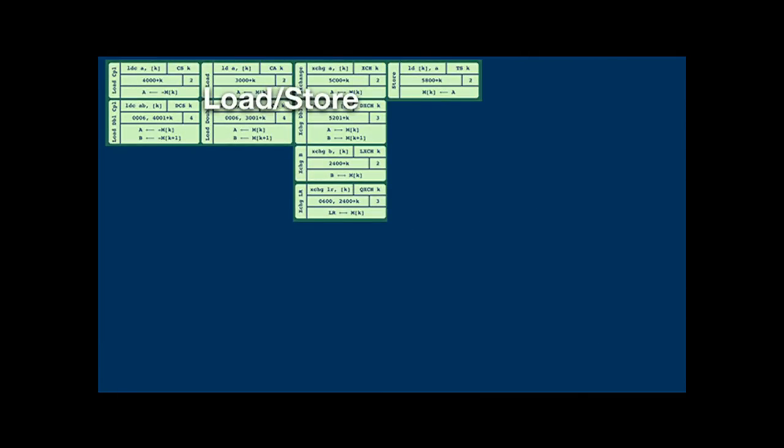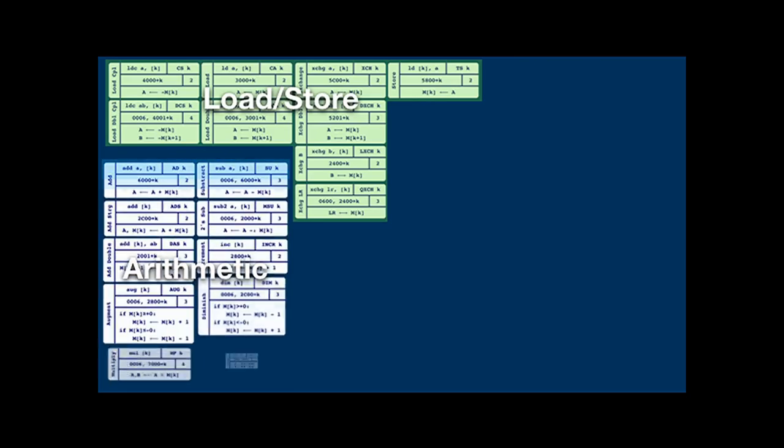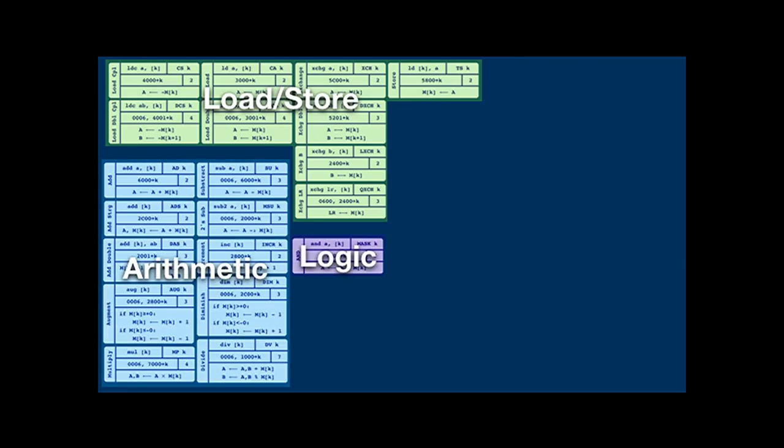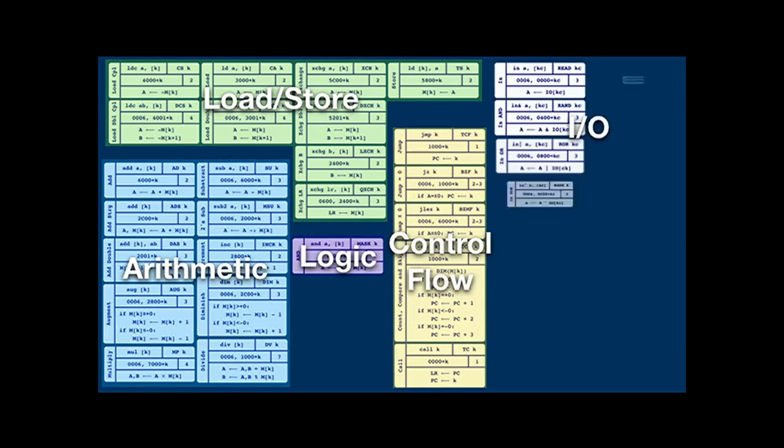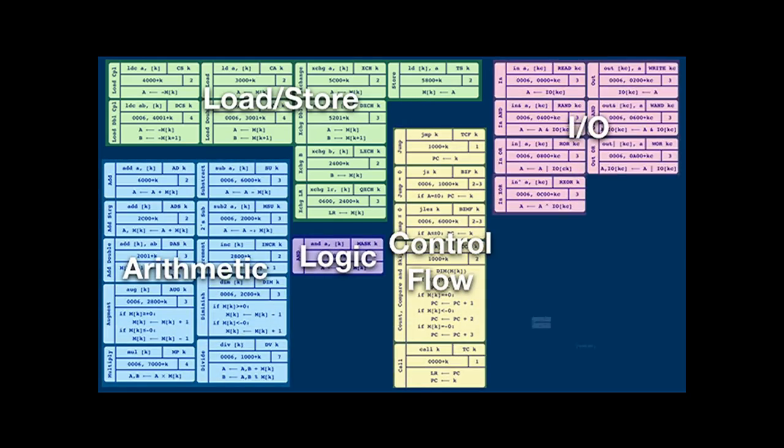Thirty-six instructions provided just about the performance required for the mission. These are the 36 instructions: some load and store instructions, arithmetic and logic, control flow instructions, I/O instructions, and instructions for dealing with interrupts.